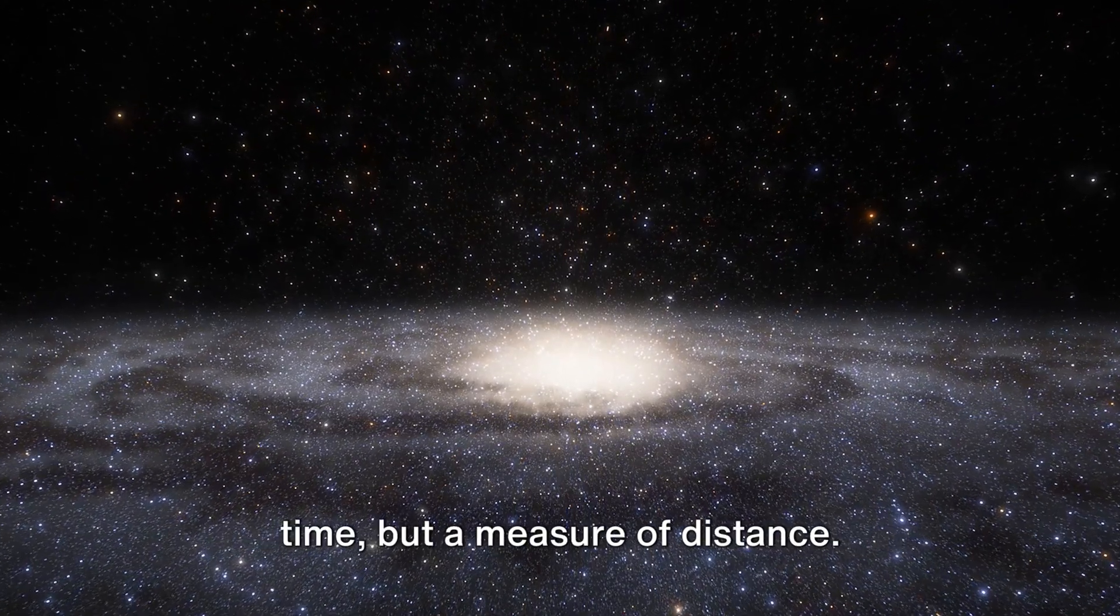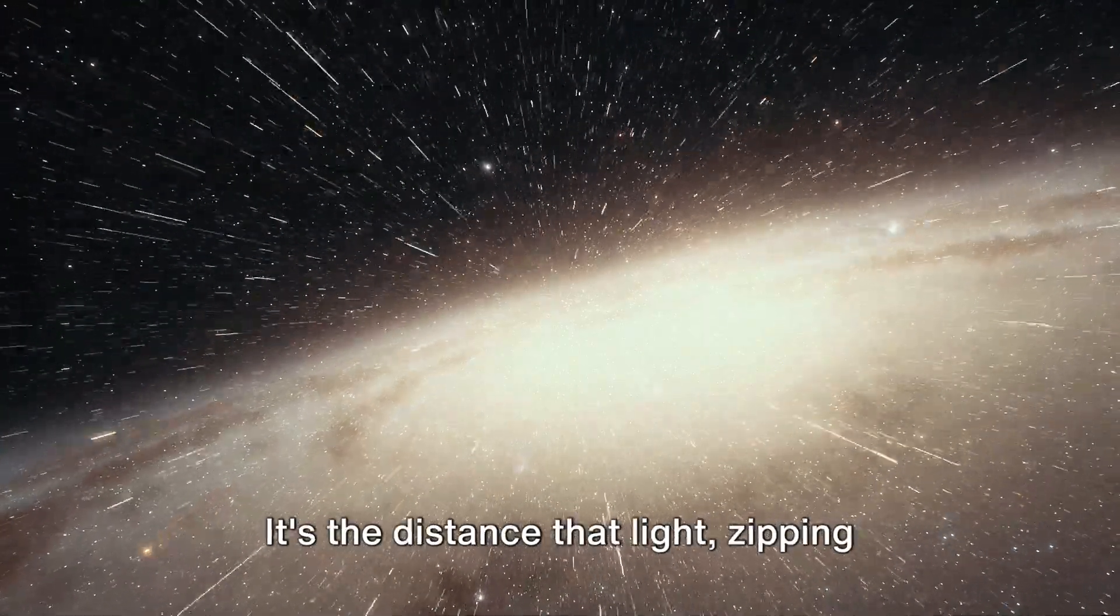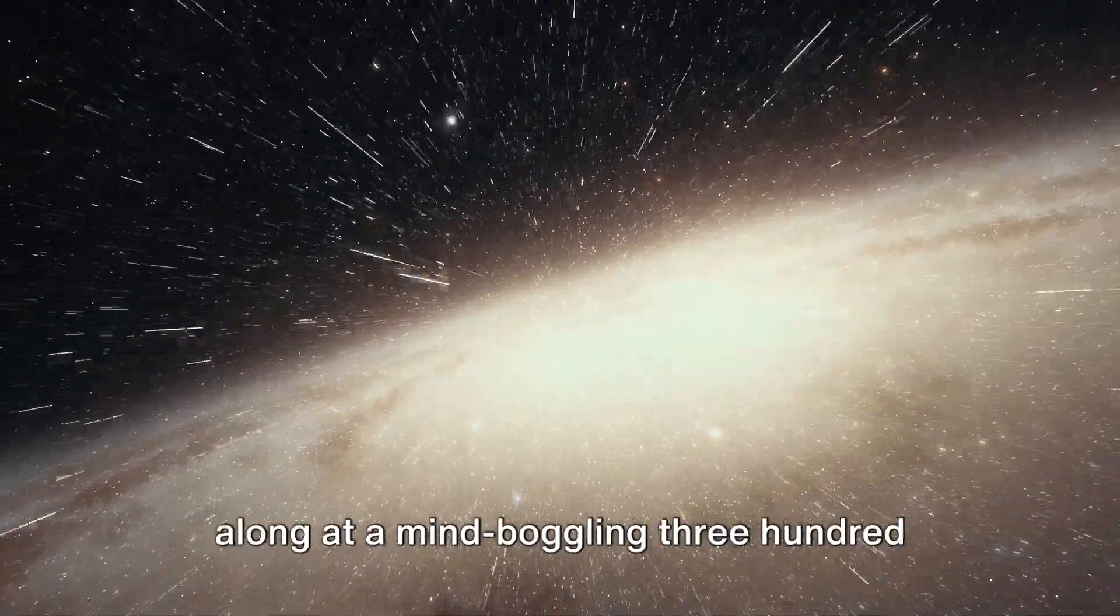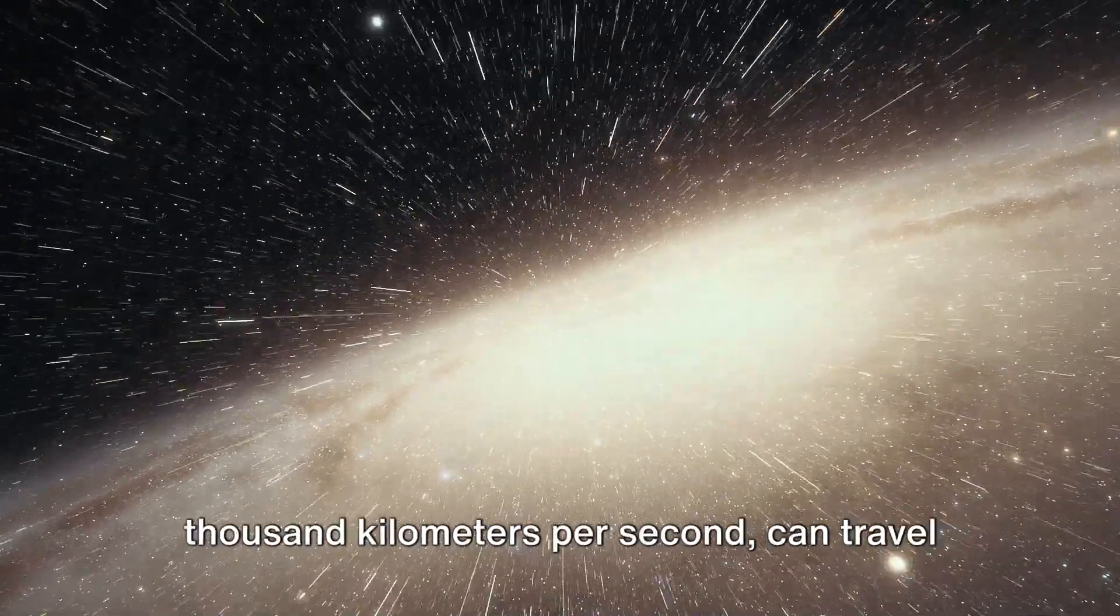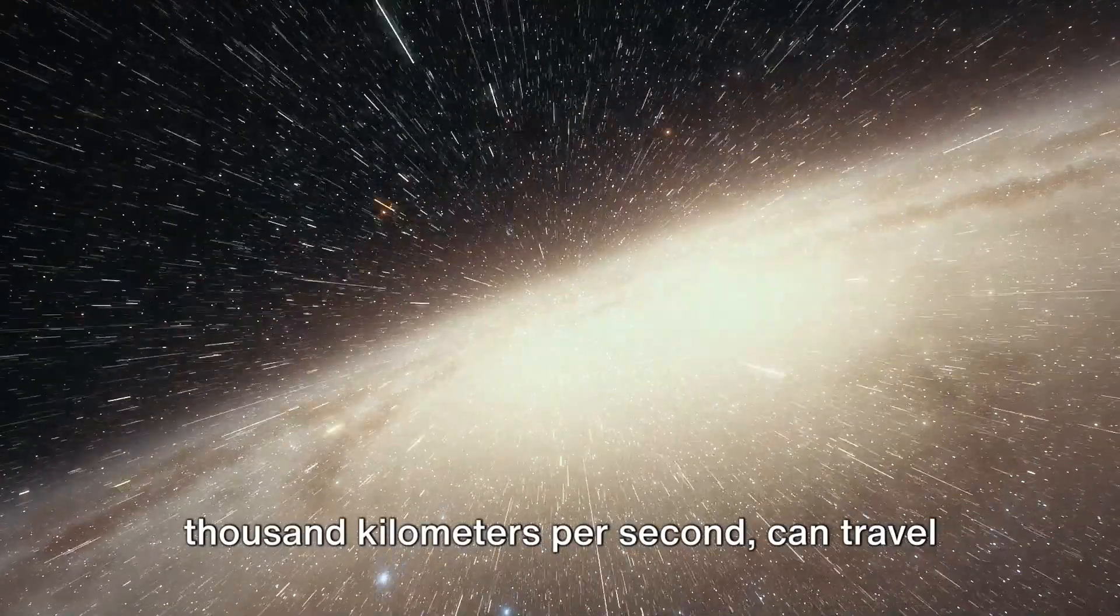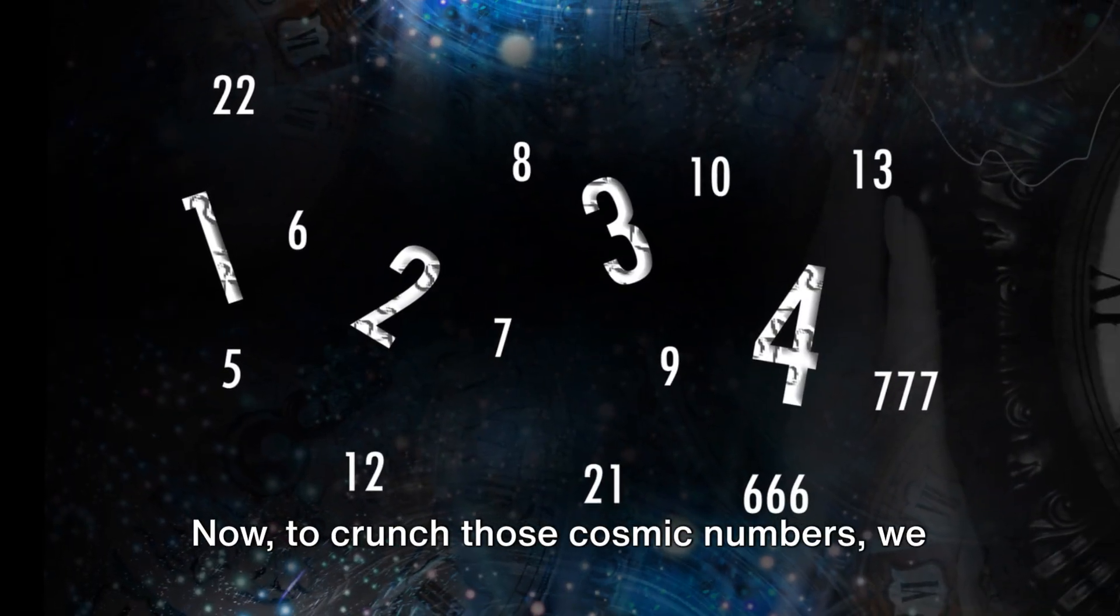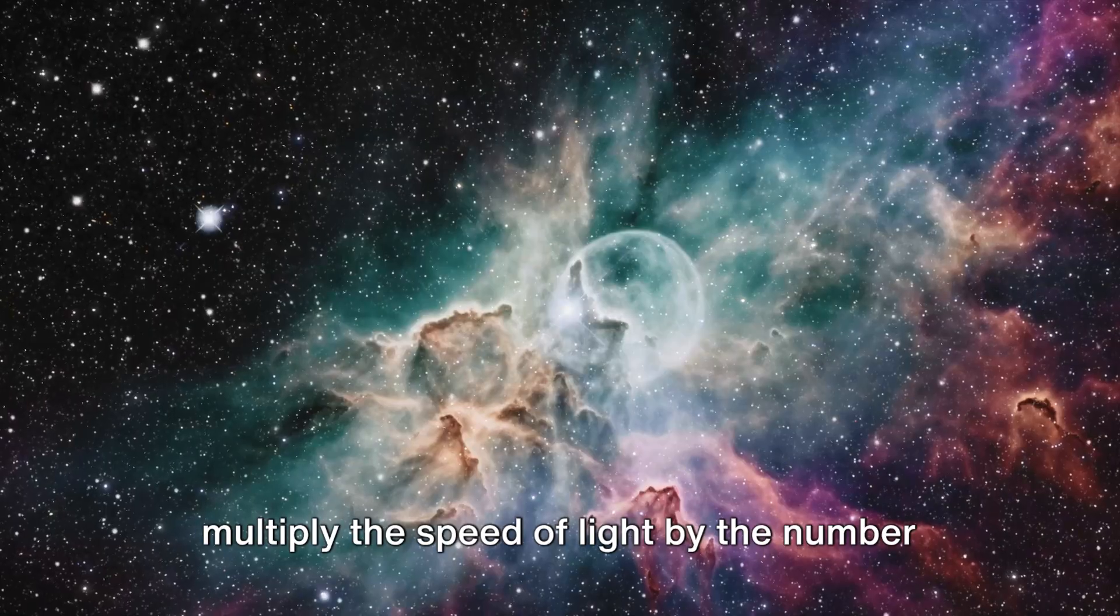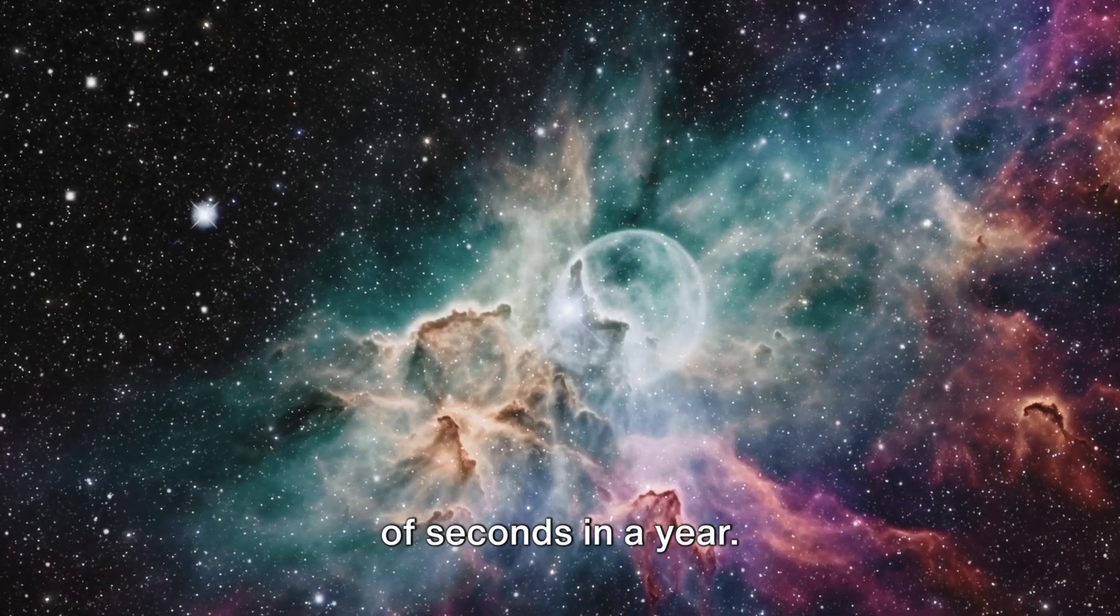A light year is not a measure of time, but a measure of distance. It's the distance that light, zipping along at 300,000 kilometers per second, can travel in a single year. Now, to crunch those cosmic numbers, we multiply the speed of light by the number of seconds in a year.